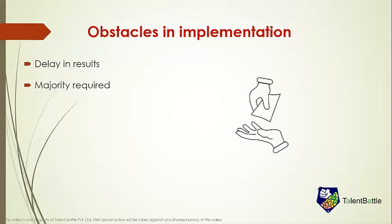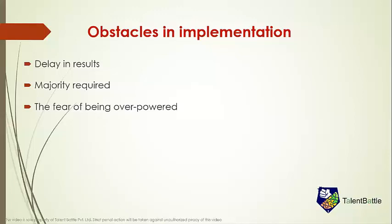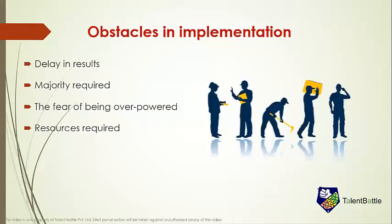Majority required. The passing of the bill for one nation one election will require the backing of at least half of the members of both the houses of parliament. If it is passed in the lower house, it needs a nod from the upper house also. The fear of being overpowered — elections are the greatest mediums for the people to get their voices heard, and if the major ones are conducted only once in five years, then the masses will fear being ignored by the executive. Resources required — this new process shall require manpower and machinery on a humongous scale, and managing all the work over the period of five years in just a day seems to be challenging.